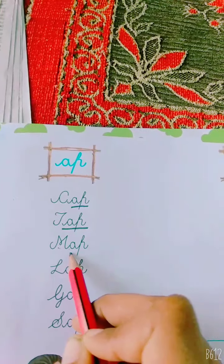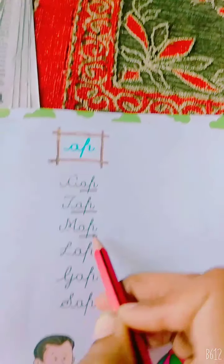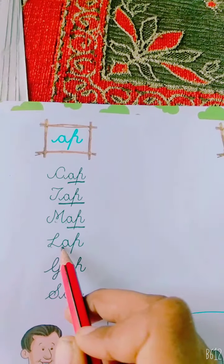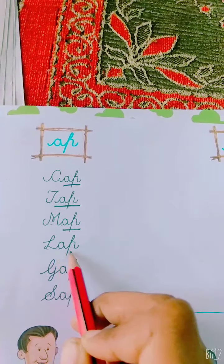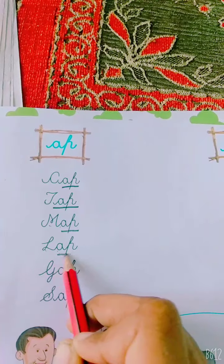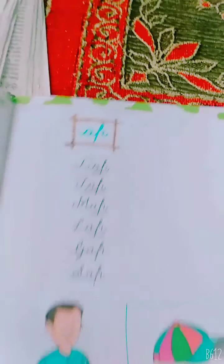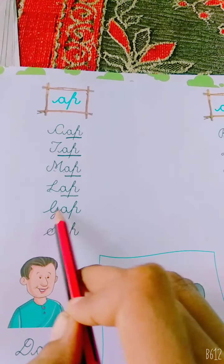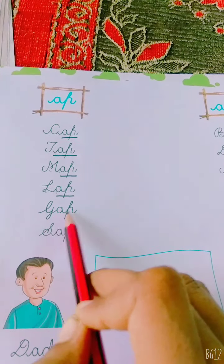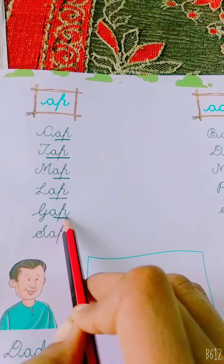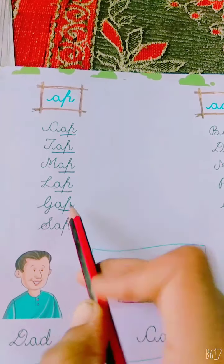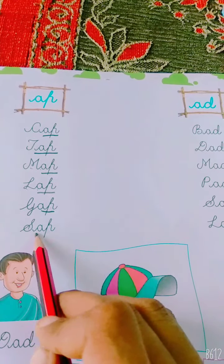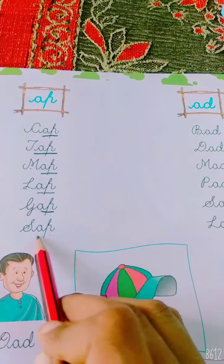M, AP — map. L, AP — lap. G, AP — gap. S, AP — sap.